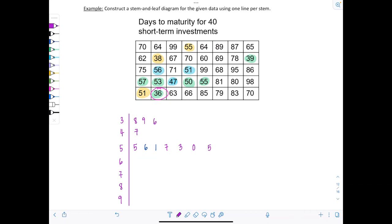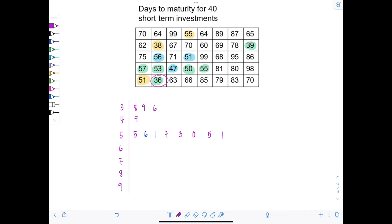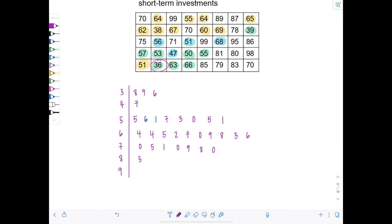Then repeat for fours. I'm looking for 40-somethings. Here's 47. Now looking for 50-somethings: 55, so 5. Anything in the second row? Nope. Third row: 56, 51, so 6, 1. What else? 57, 53, 50, 55, so 7, 3, 0, 5. And then 51. For 6: 64, 64, 65, and then 2, 7, 0, 9. Keep going like that. For 7: 0, 5, 1, 0, 9, 8, 0. For 8: 5, 9, 1, 7, 0, 3, 6. For 9: 9, 9, 5, 8. This is like your first draft through.